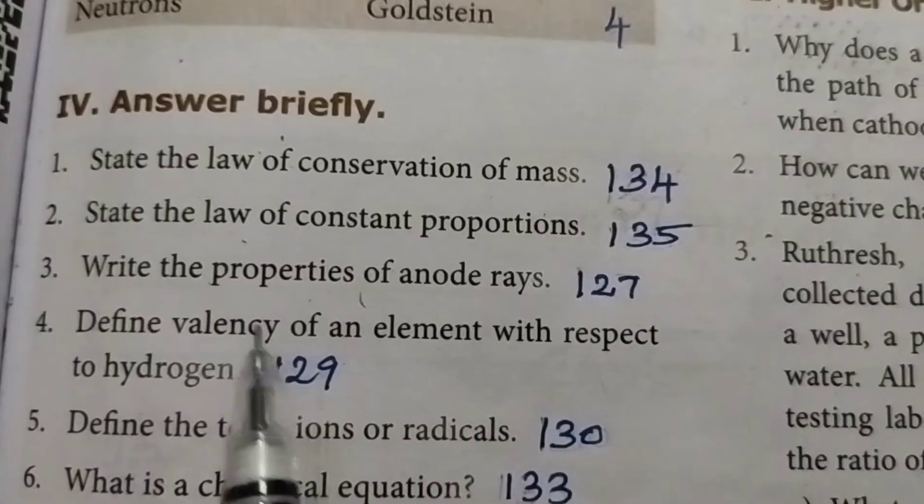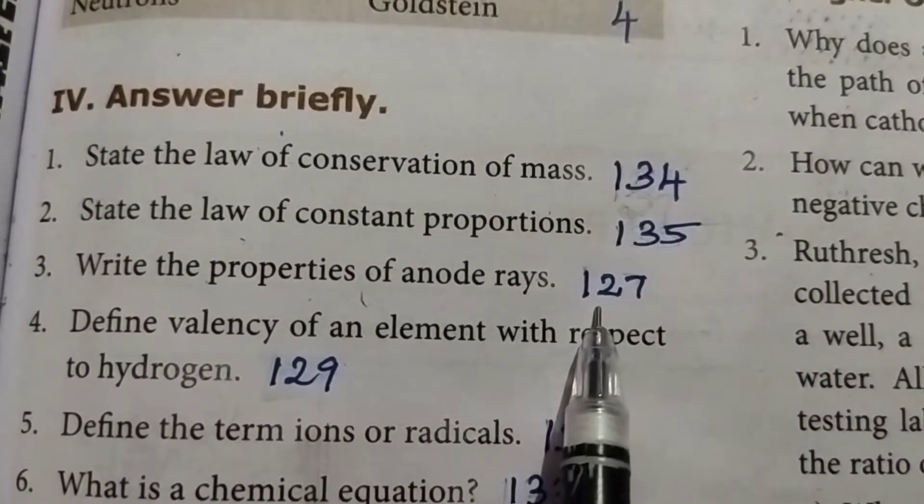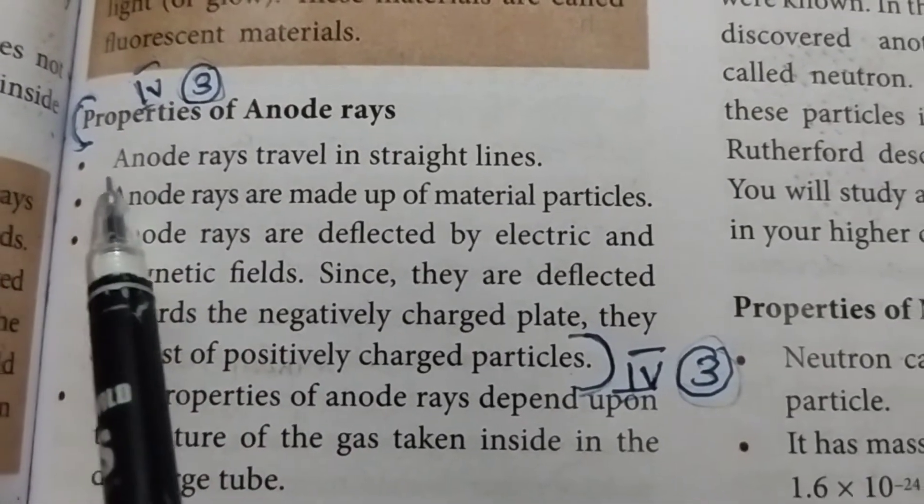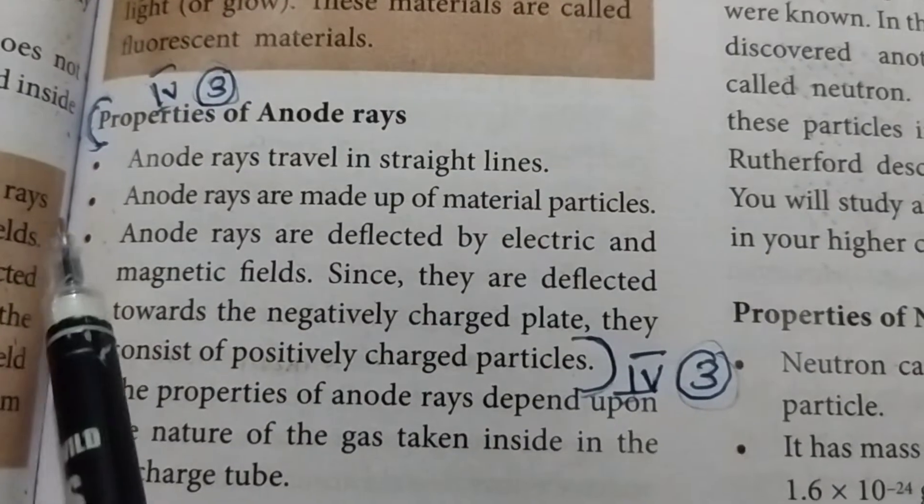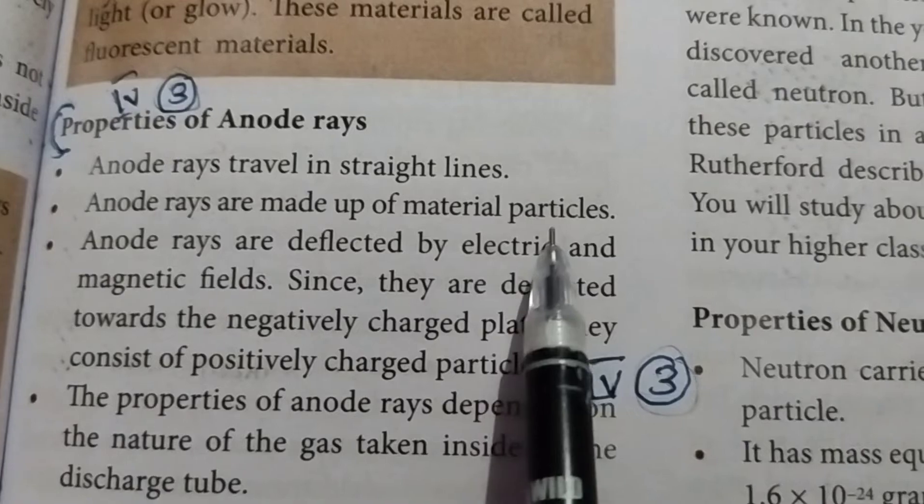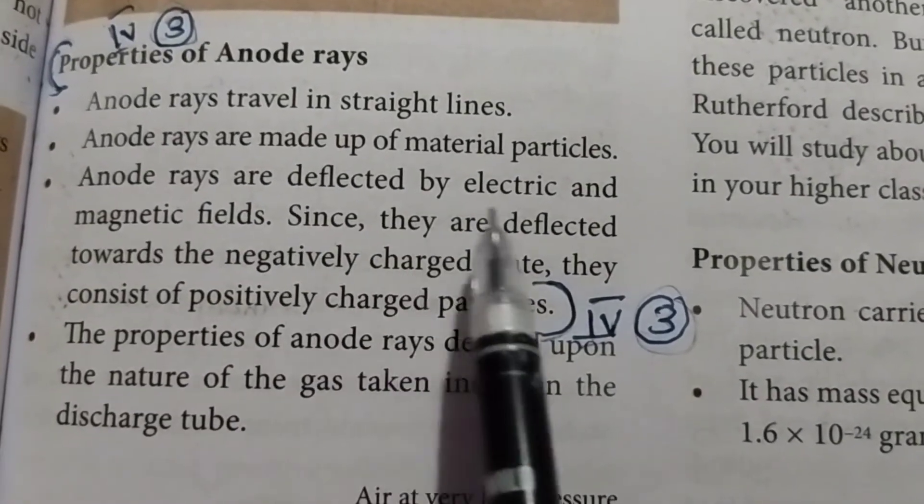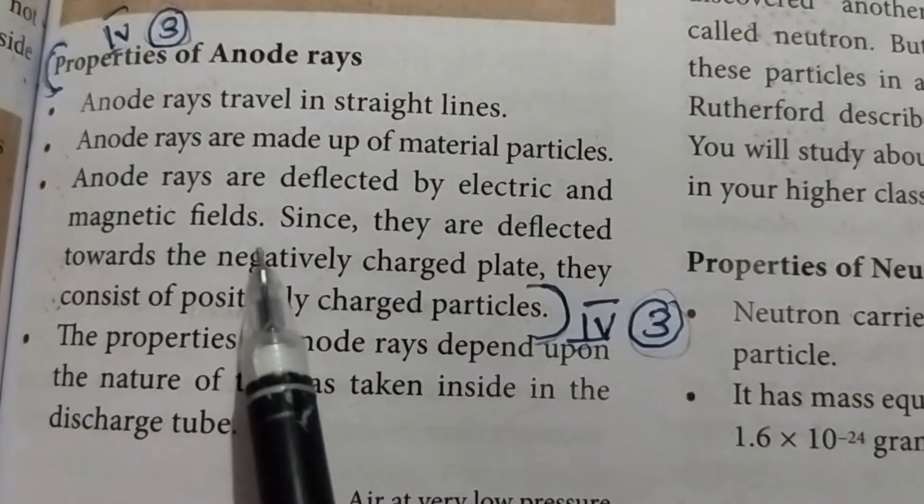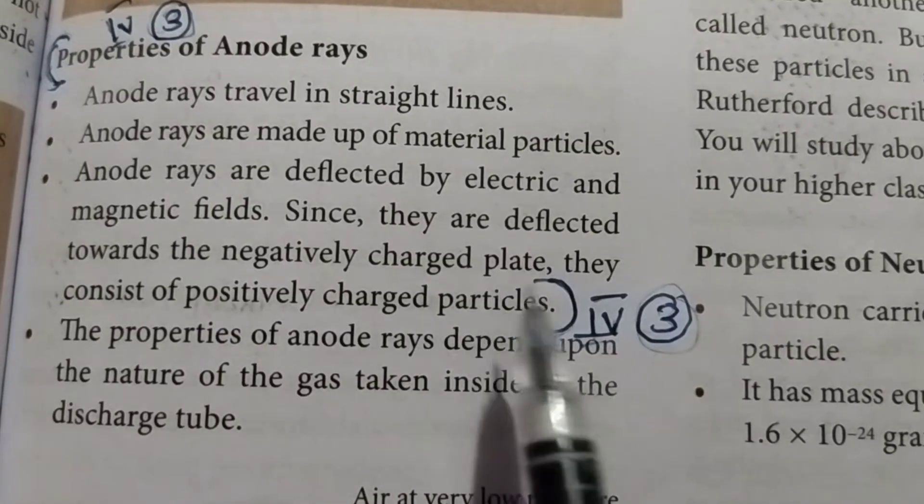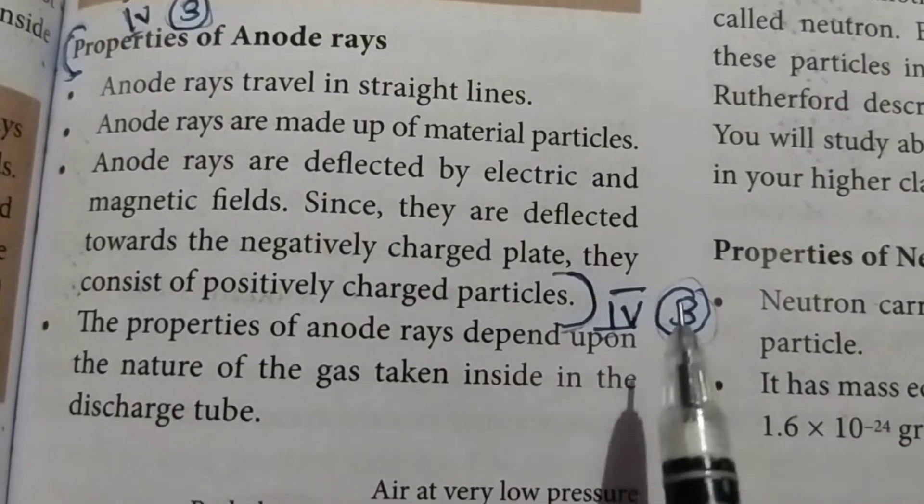Third one: write the properties of anode rays. Take page number 127. Properties of anode rays: First point, anode rays travel in straight line. Second point, anode rays are made up of material particles. Third point, anode rays are deflected by electric and magnetic field. Since they are deflected towards the negatively charged plate, they consist of positively charged particles. Fourth Roman letter, third question answer.